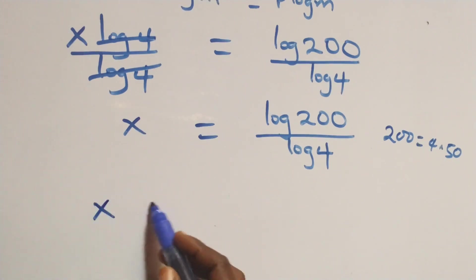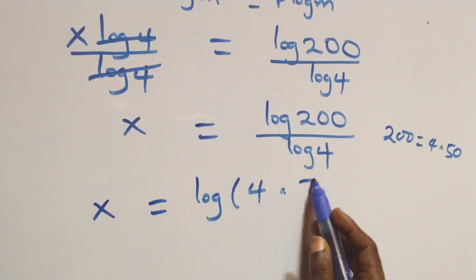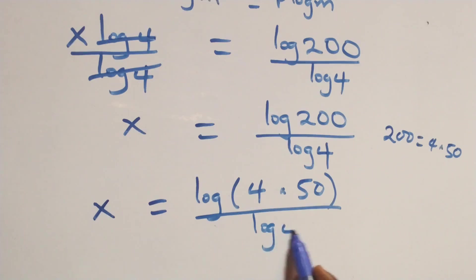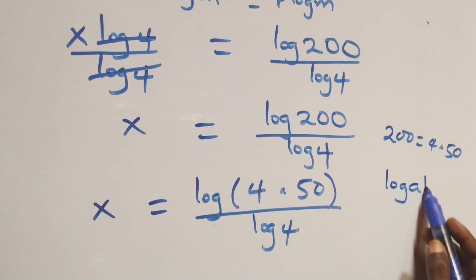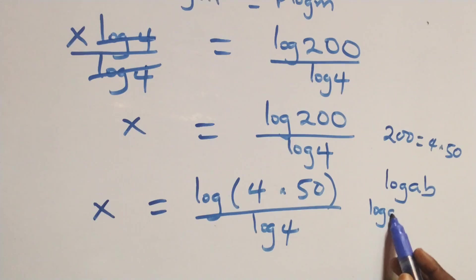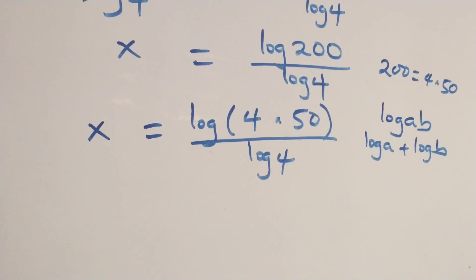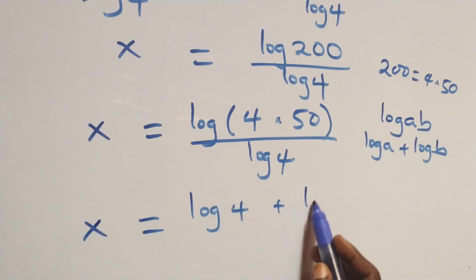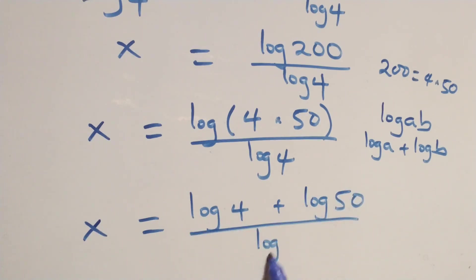From here we can express 200 as 4 times 50. So what we have becomes x equals log of 4 times 50, all over log 4. This follows the law of logarithm where log a times b equals log a plus log b.